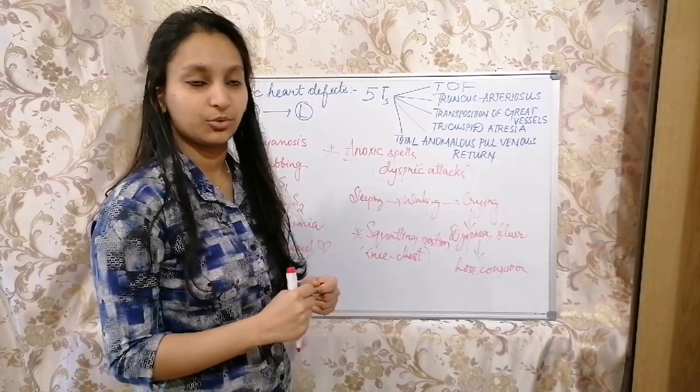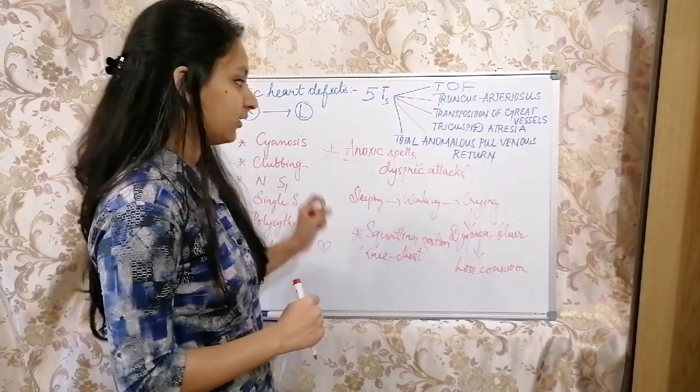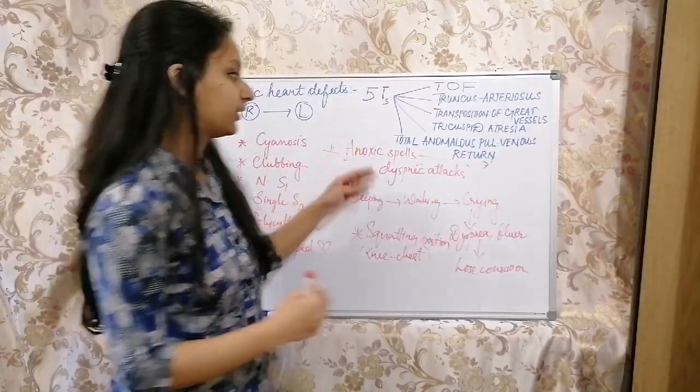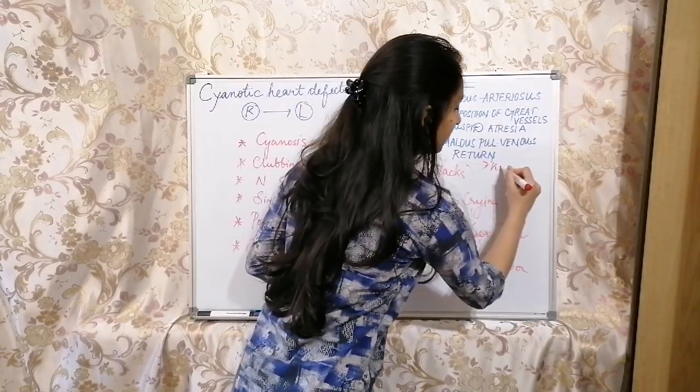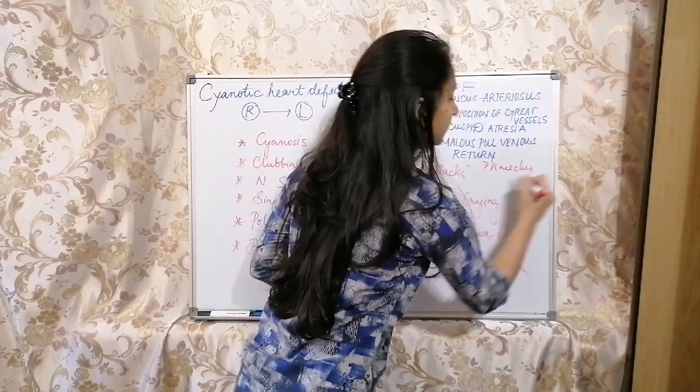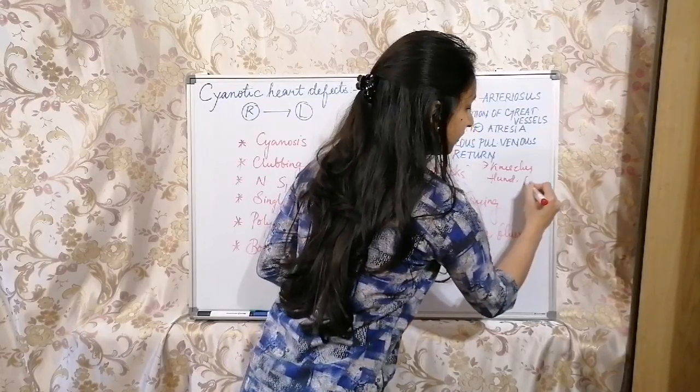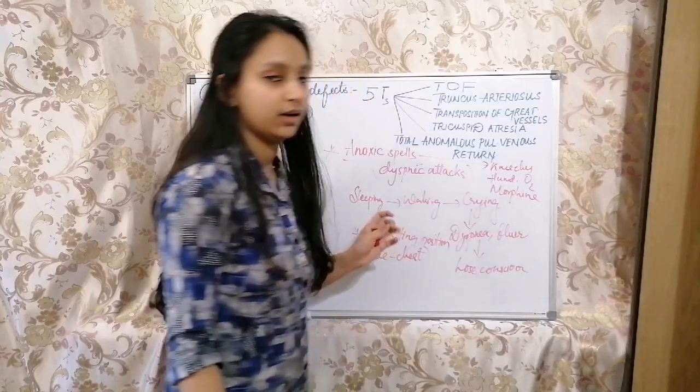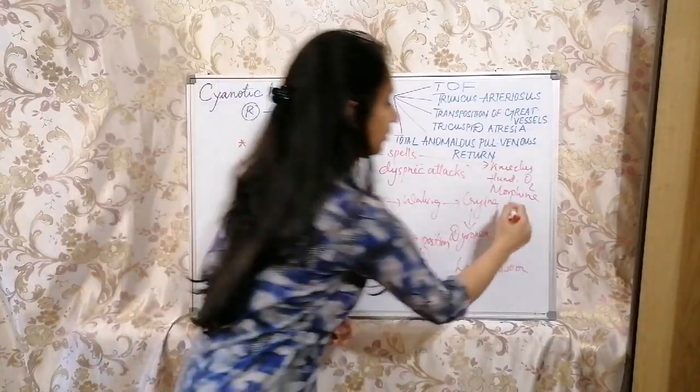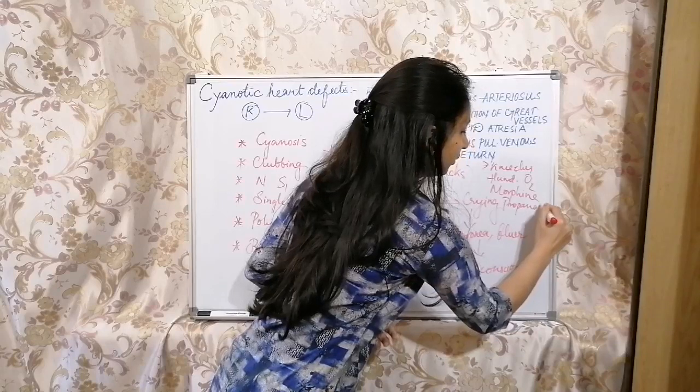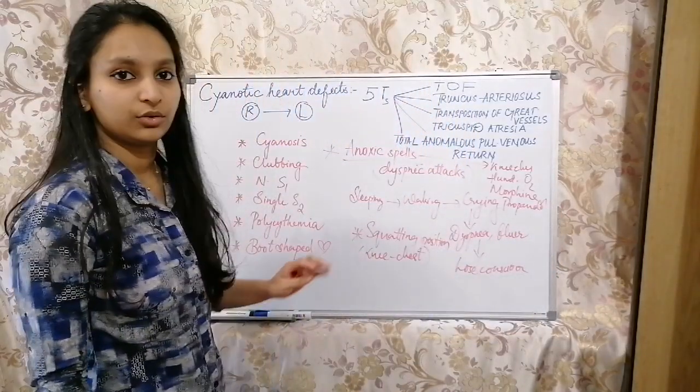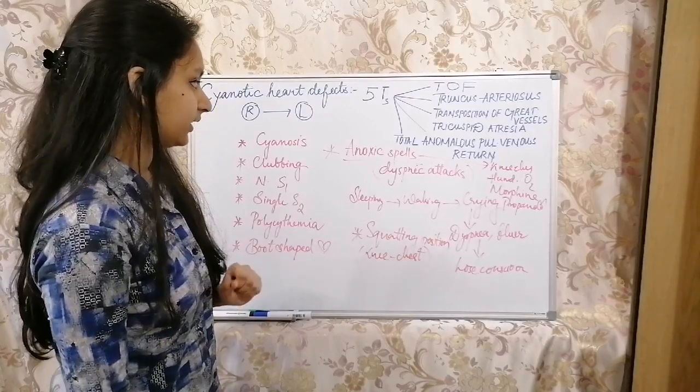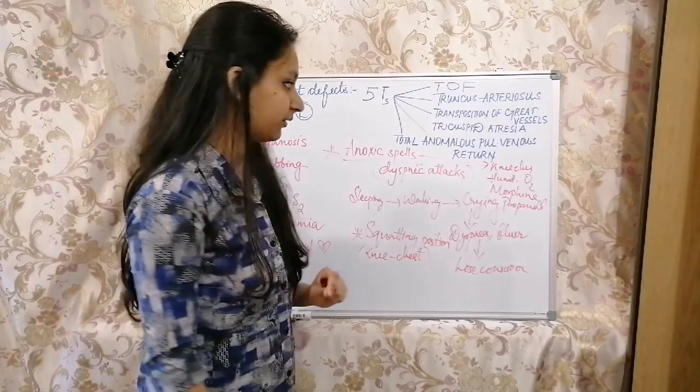In the treatment, to treat anoxic spells, we can practice knee to chest position, then humidified oxygen, morphine, and propranolol. These are all for anoxic spells. That's all for today and I feel everything is fine. This is actually a very potentially fatal situation.